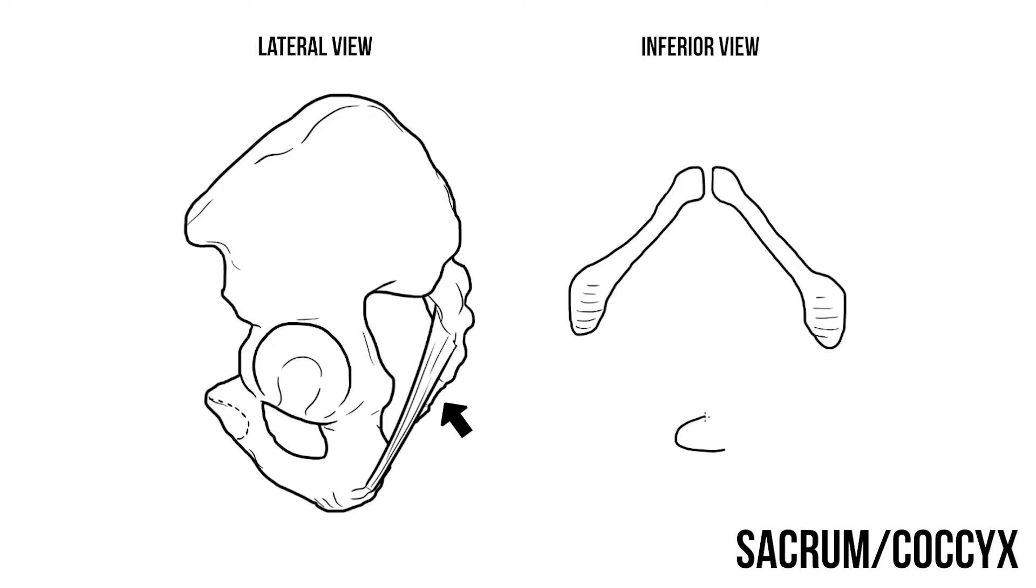Next we'll add the sacrum and the coccyx. These form the most posterior point at the perineum.